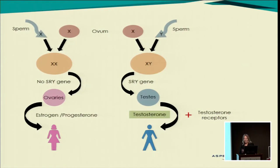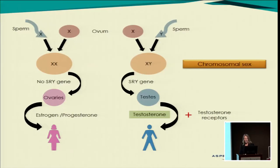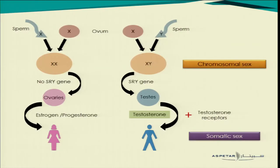So when you have the opposite — where there's no SRY gene because there's no Y chromosome — then the testes don't develop and the baby develops ovaries, which then secrete the female hormones. So that means that whether you're XX or XY is your chromosomal sex or your genotype, and whether you have the body of a man or a woman is your somatic sex or your phenotype.